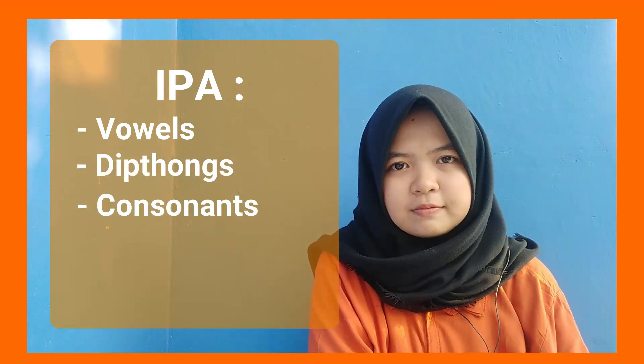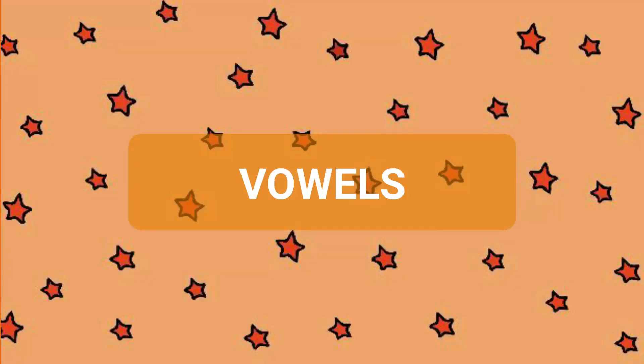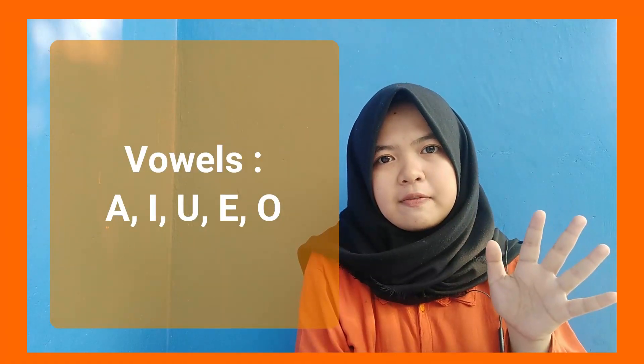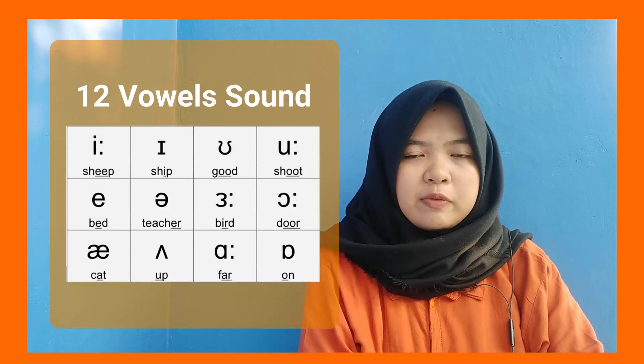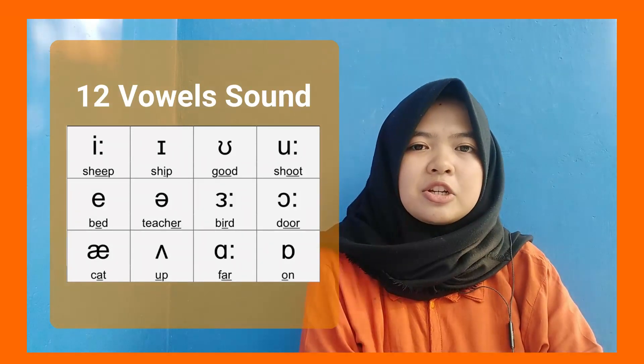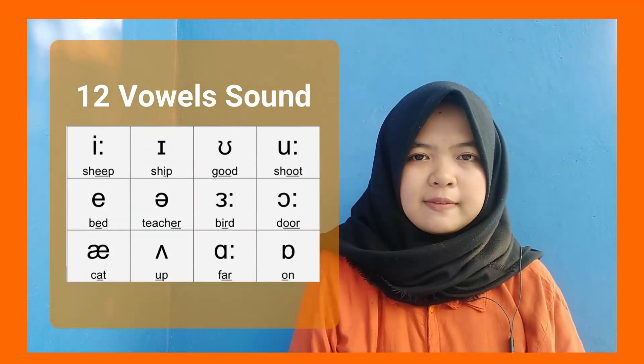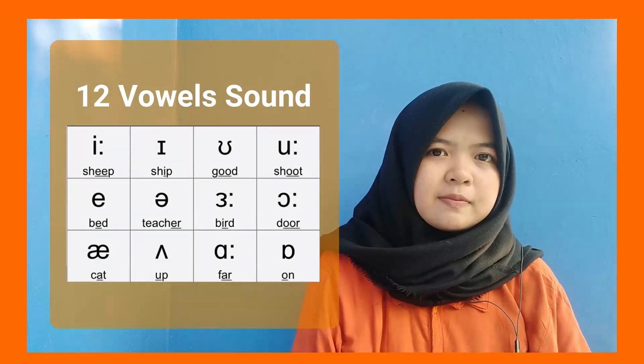IPA is divided into three parts: vowels, diphthongs, and consonants. In general, there are five vowel letters, but in terms of pronunciation, there are 12 vowel sounds.